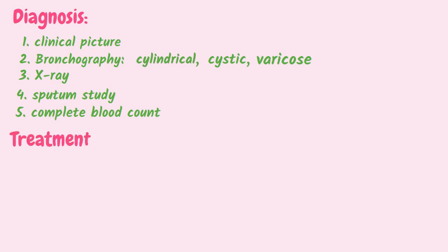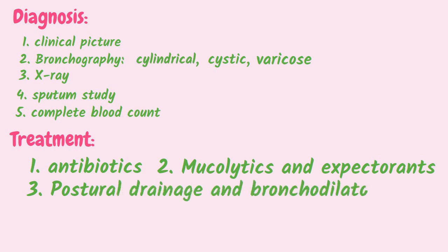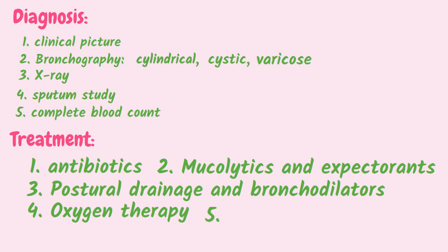In the course of treatment of bronchiectasis, patients are advised to avoid exposure to smoke or dust, and to live in warm and dry climatic conditions. Medications used in treatment are the following: antibiotics, which are administered to control the inflammatory process; mucolytics and expectorants; postural drainage; and bronchodilators, which are administered to improve the drainage of secretion from the bronchi. Oxygen therapy is done for patients with hypoxemia. Surgical resection of the affected area is done as a last resort if there is no response to medications.